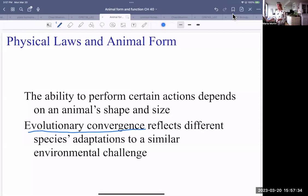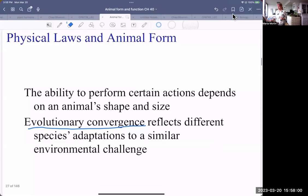But we're back with physical laws and animal form. So let's look at evolutionary convergence. I don't know if you've been to Australia, but I highly recommend it because you'll see animals that are quite different from North American animals, but they're adapted in very similar ways because they have similar environments. They have forests, they have grasslands, they have deserts, and the animals have adapted accordingly.